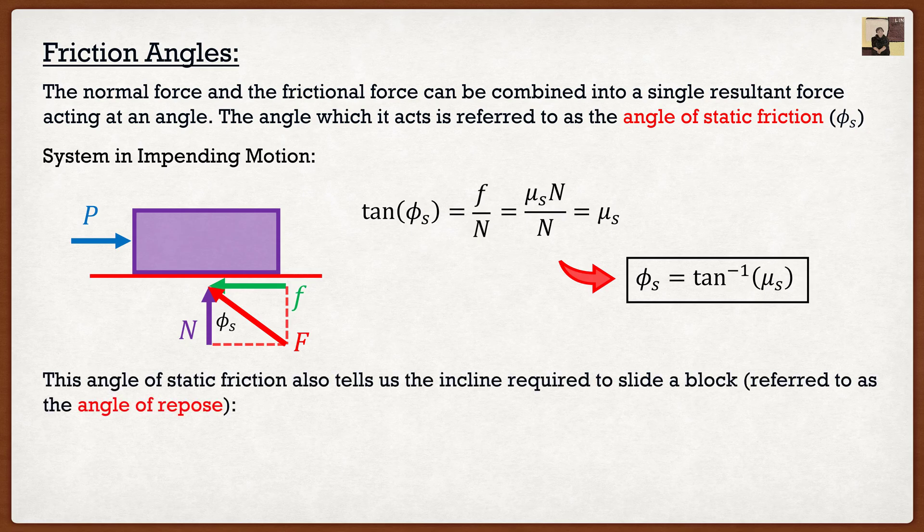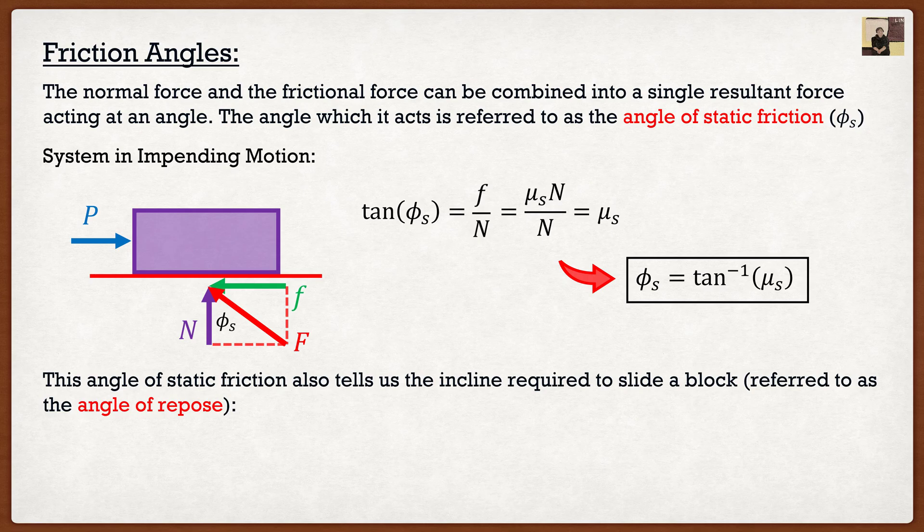Because this is also referred to as the angle of repose. So if I were to take my box and I were to start inclining it, we know that there's going to be a specific point where the box is going to slide down the incline, and this angle is actually going to be φ_s.